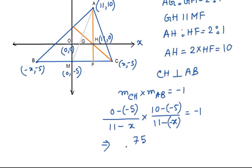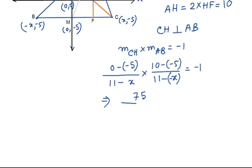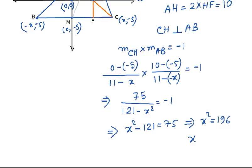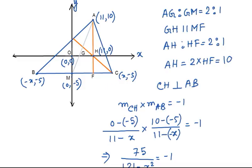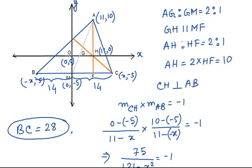So it's going to be 75 divided by 121 minus x squared, this equals minus 1. So x squared minus 121 equals 75. This implies x squared equals 196, so naturally x is going to be 14. Once we get the length of x to be 14, we can claim that BC is going to be 28. So length of BC is 28.